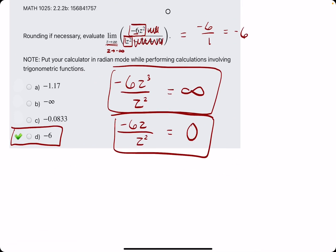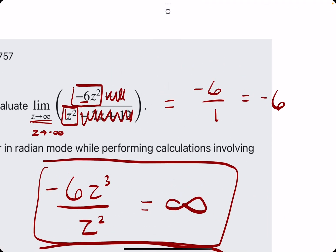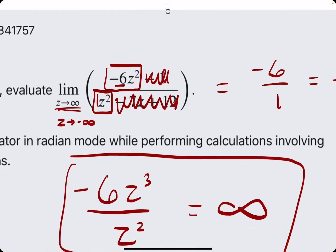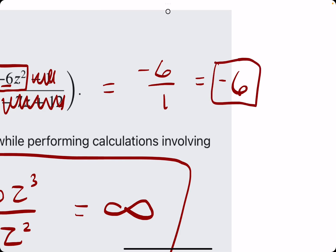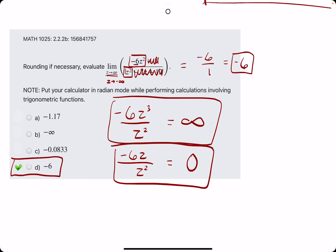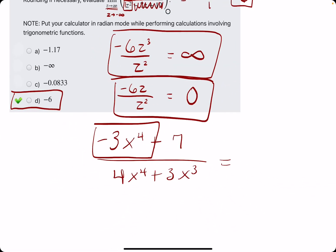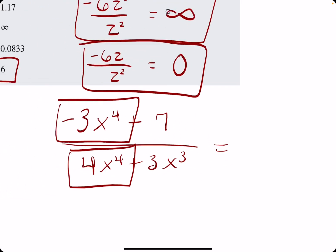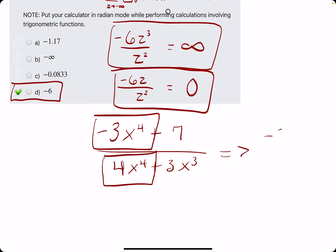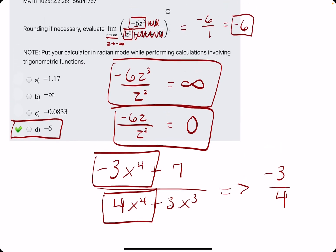And again, if the degrees on top and bottom are equal, the limit will go to the coefficients divided by one another. So a random example, if we have negative three x to the fourth plus seven over four x to the fourth plus three x cubed, our highest degree on top, our highest exponent is x to the fourth and that has a coefficient of negative three. Degree on the bottom is x to the fourth, coefficient of four, so that limit would equal negative three fourths.